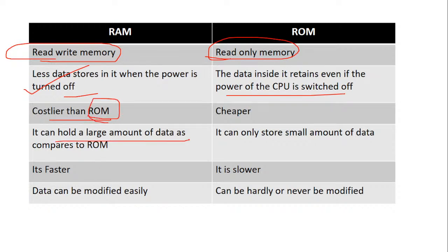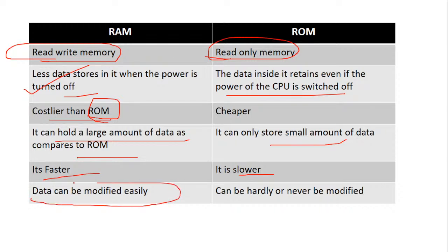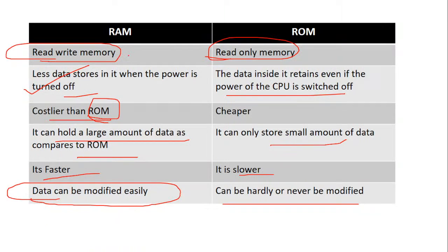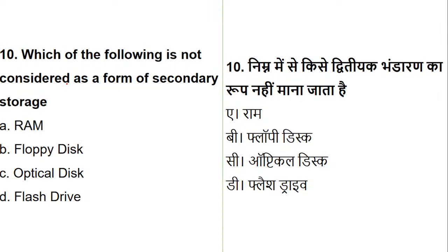Comparing RAM and ROM: RAM is read-write memory, while ROM is read-only memory. RAM loses data when power is turned off, whereas ROM retains data even when power is switched off. RAM is costlier than ROM; RAM holds more data than ROM; RAM is faster than ROM; and data in RAM can be modified easily, whereas ROM data can hardly or never be modified.